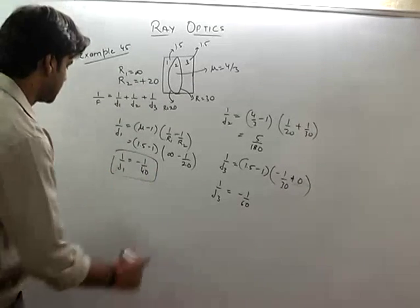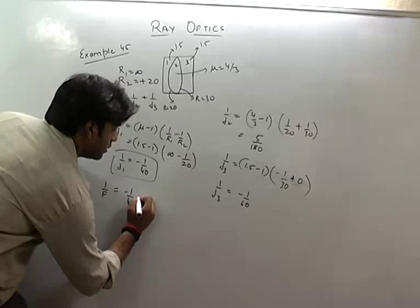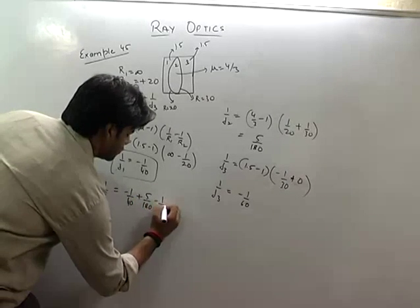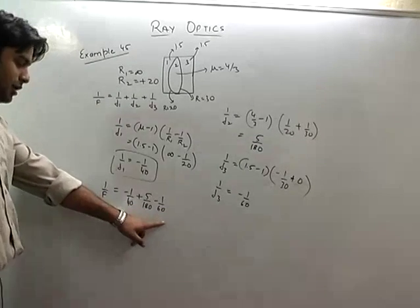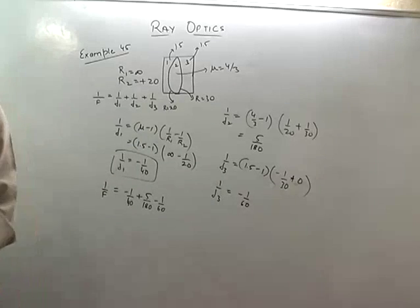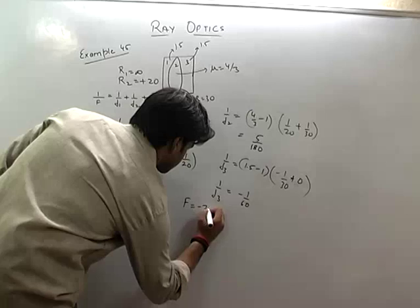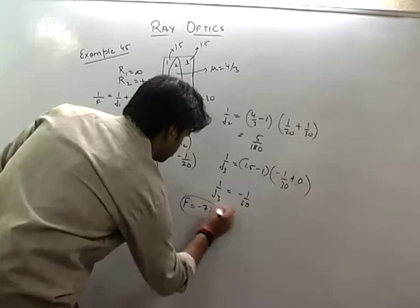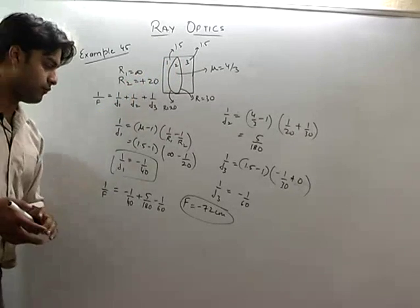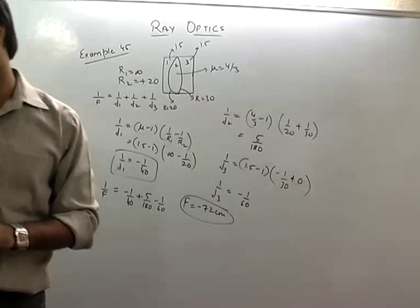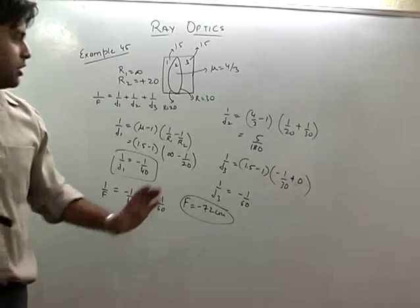Now I will add them. The net resultant 1/f = -1/40 + 5/180 - 1/60. The answer comes out to be f = -72 cm. That means the focal length is on the negative side, which means the combination will be behaving as a divergent lens, not a convergent lens.